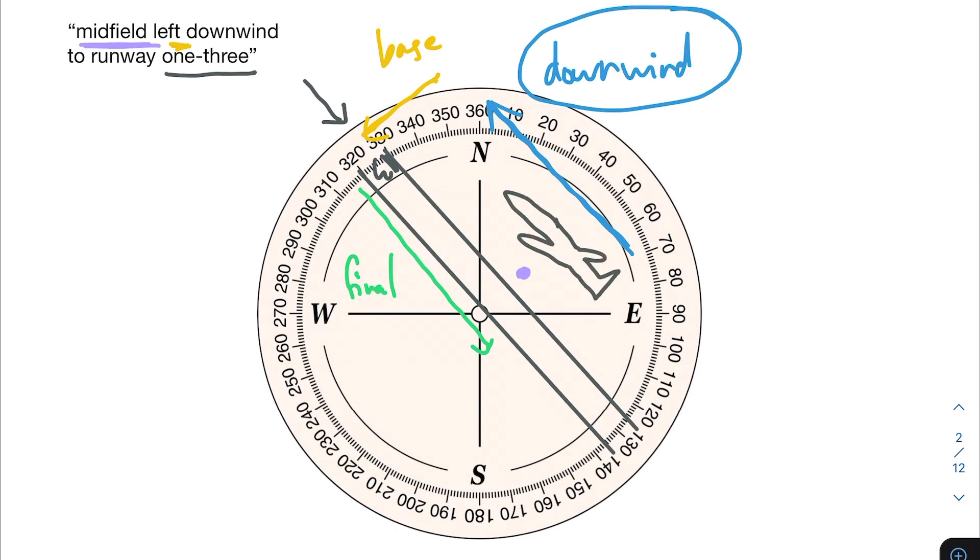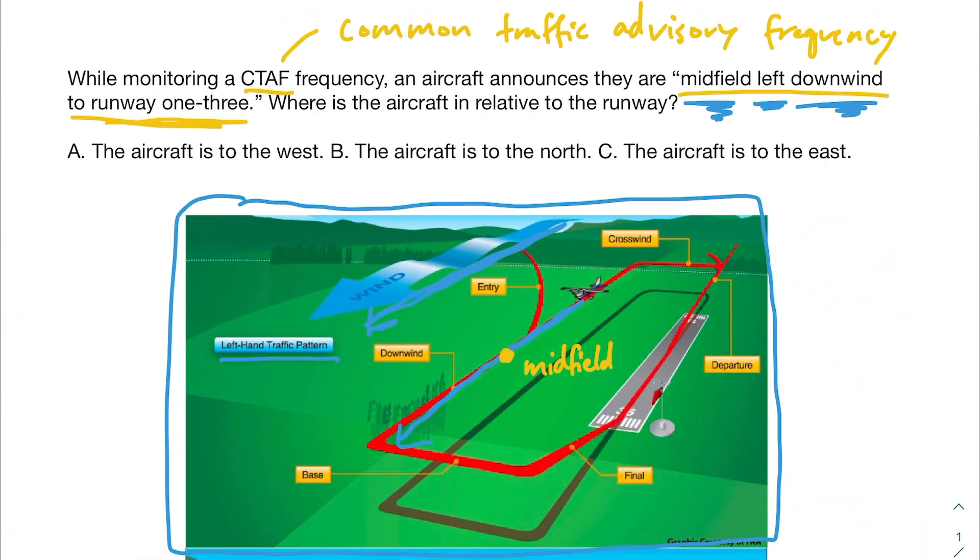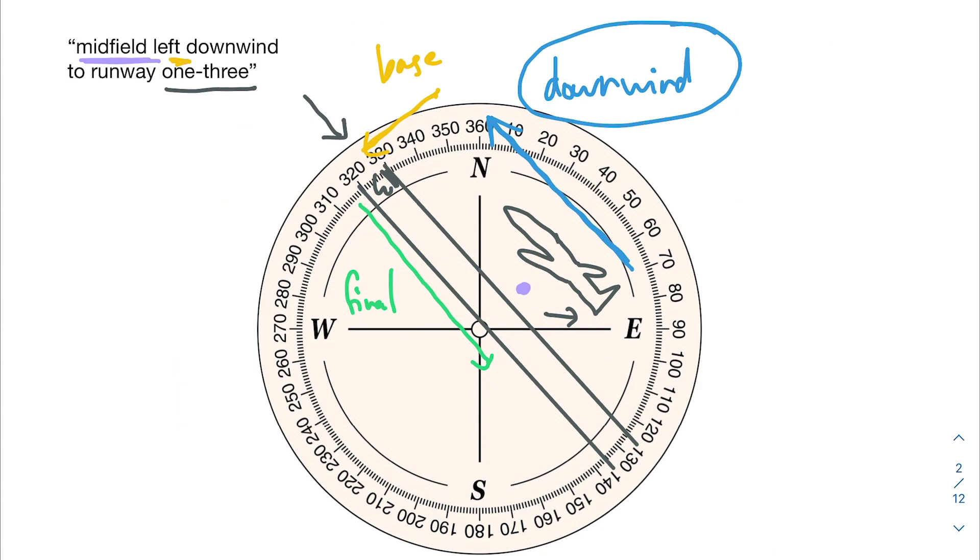And then we're asked where it is relative to the runway. So in this case, we would be east of the runway. Our final answer would be that we're east of the runway based on this description that the pilot has given us. So let's see if that is one of the answers. It looks like it is. So we go ahead and circle it. The aircraft is not to the west. This would be true if we were following right-hand traffic pattern, but we're not, and the aircraft is not to the north. One way that that could be true is, for example, if instead of downwind, we were on the base leg, for example, then we would be north of the runway.